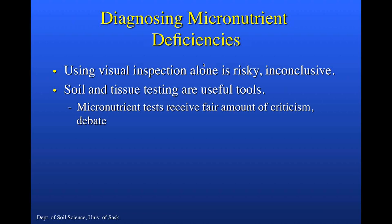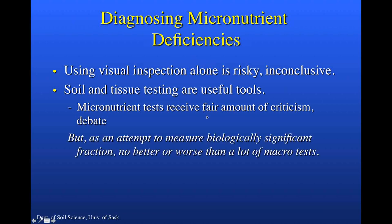Soil and tissue testing are useful tools. The micronutrient tests have received a fair amount of criticism and debate, but in my experience, as an attempt to measure a biologically significant fraction in the soil, some micronutrient tests are no better or worse than many macronutrient tests. There are a lot of factors that can come into play and affect whether we ultimately see a deficiency occur. Because of that complexity, the soil assessment of availability is really only one part of the rather complex puzzle.